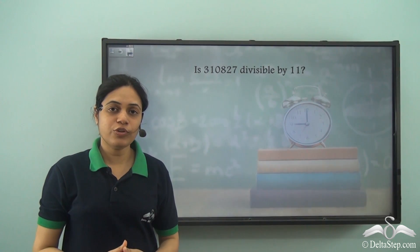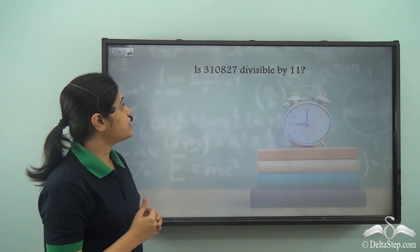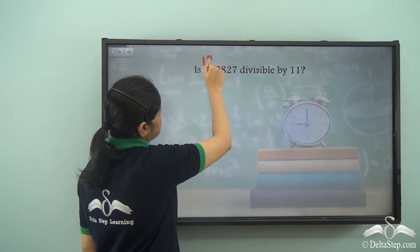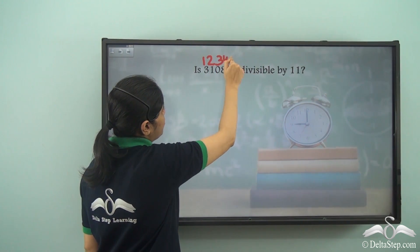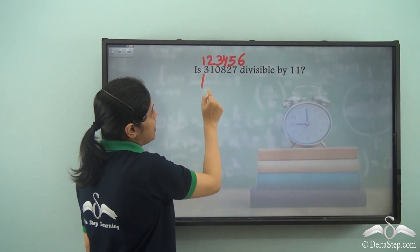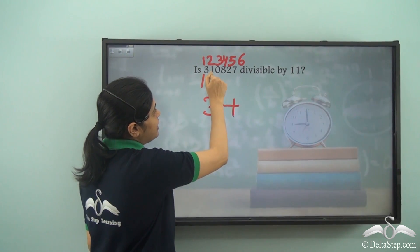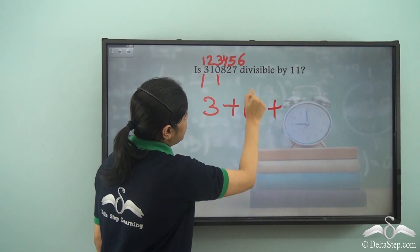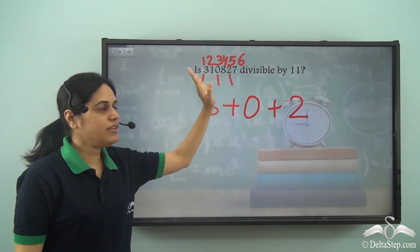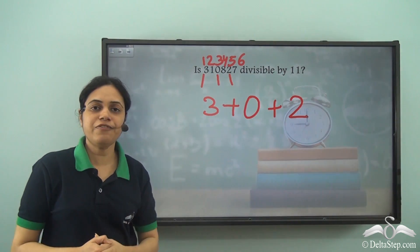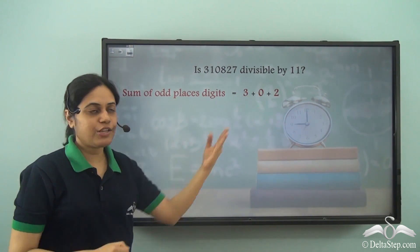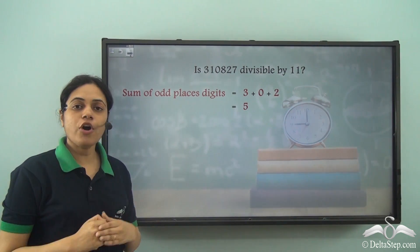Now can you find this on your own? Is 310827 divisible by 11? This is the 1st, 2nd, 3rd, 4th, 5th, and 6th place. The digits in the odd places: I take 3, leave 1, take 0, leave 8, take 2. So the odd place digits are 3, 0, and 2. Adding them: 3 plus 0 is 3, and 3 plus 2 is 5. The sum of the odd place digits is 5.